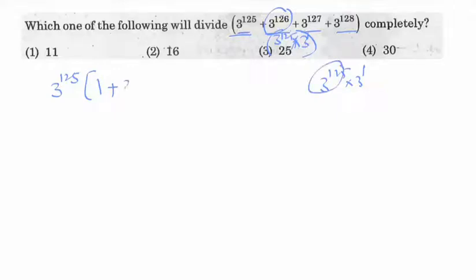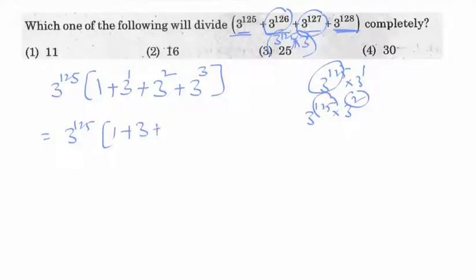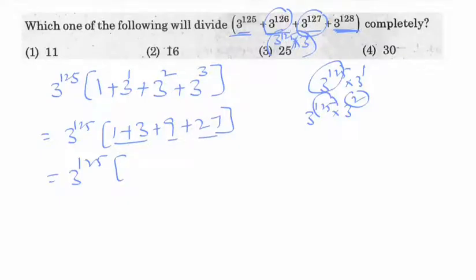Taking 3 power 125 common, we get 3 power 125 into open bracket: 3 power 0 plus 3 power 1 plus 3 power 2 plus 3 power 3. That is because a power m into a power n equals a power m plus n. So the values are: 1, 3 power 1 is 3, 3 square is 9, 3 power 3 is 27.